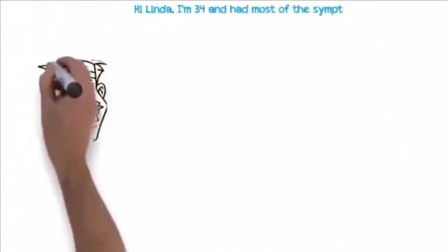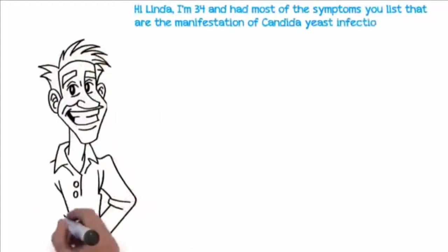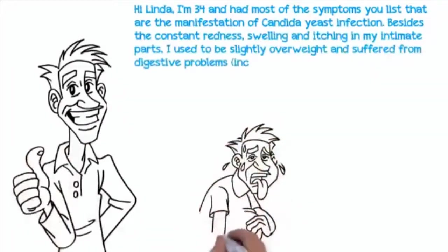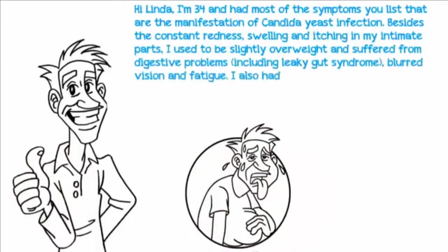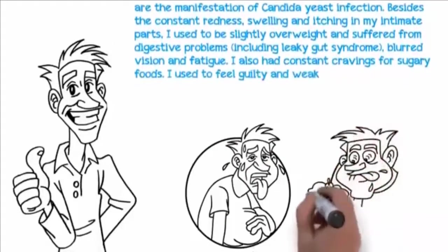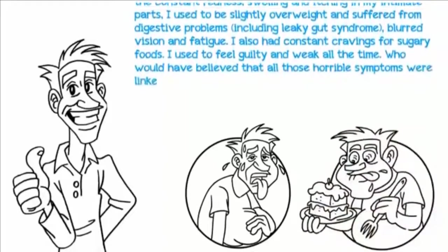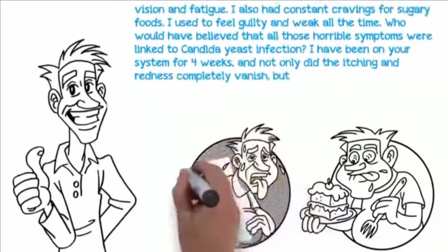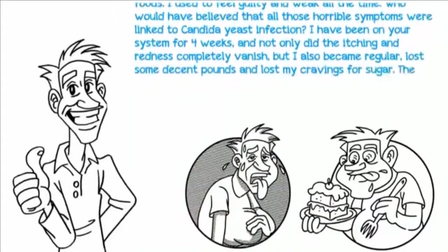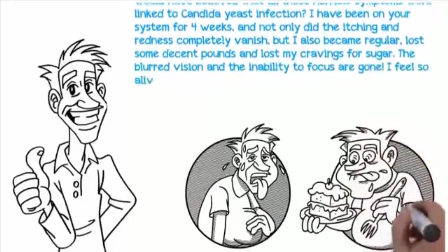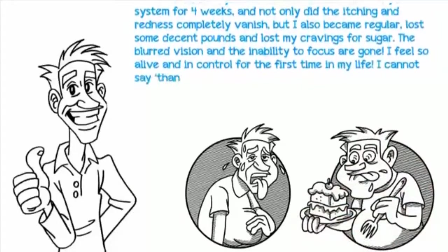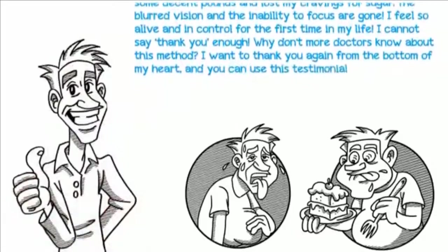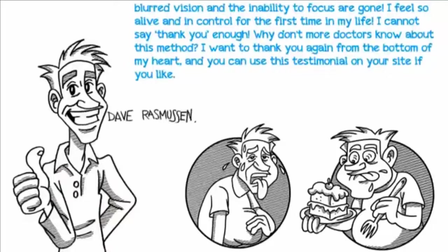Hi Linda. I'm 34 and had most of the symptoms you list. Besides the constant redness, swelling, and itching in my intimate parts, I used to be slightly overweight and suffered from digestive problems, including leaky gut syndrome, blurred vision, and fatigue. I also had constant cravings for sugary foods. I have been on your system for four weeks, and not only did the itching and redness completely vanish, but I also became regular, lost some decent pounds, and lost my cravings for sugar. The blurred vision and the inability to focus are gone. I feel so alive and in control for the first time in my life. Dave Rasmussen, age 34, Melbourne, Australia.